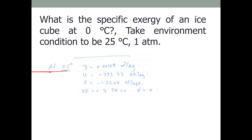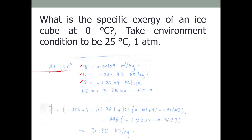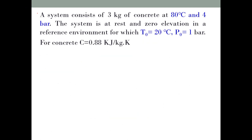We read the properties of ice at 0°C from the property tables — specific volume, internal energy, and entropy. There is no information about velocity, height, or sigma, so those terms are assumed to be zero. Substituting the values into the exergy equation gives the specific exergy of the ice as 30.88 kJ/kg.